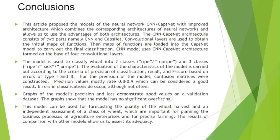This model is used to classify wheat into two classes — ripe and unripe — and into three classes — ripe, sick, and unripe. Precision values mostly reach 0.8–0.9, which can be considered a good result. This model can be used for forecasting the quality of the wheat harvest and for independent assessment of wheat class, which are important for planning business processes in agriculture enterprises and for precision farming.